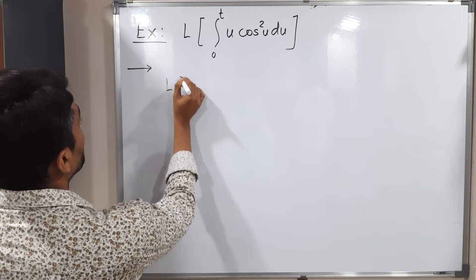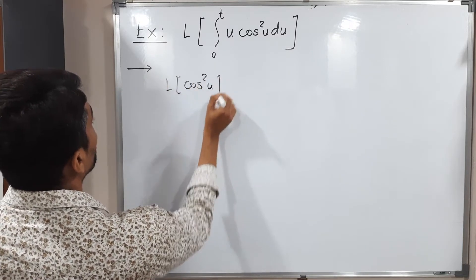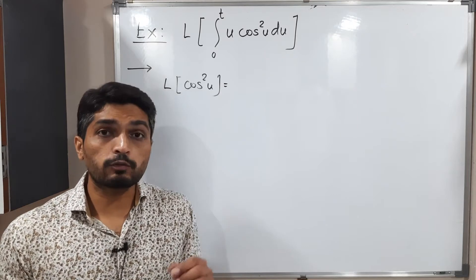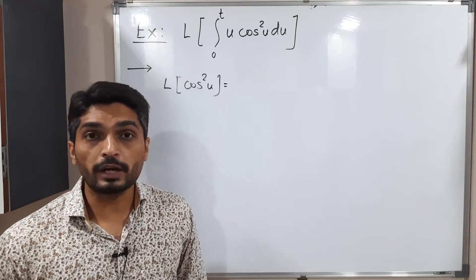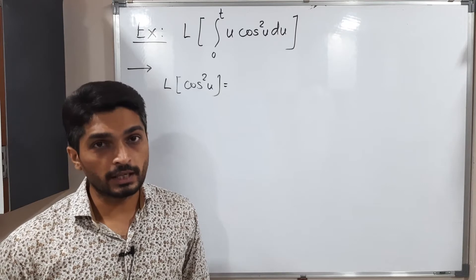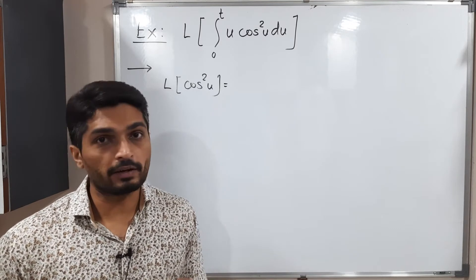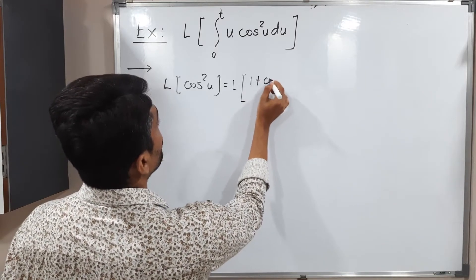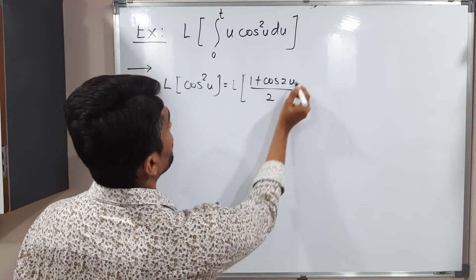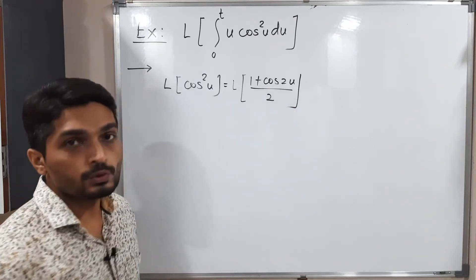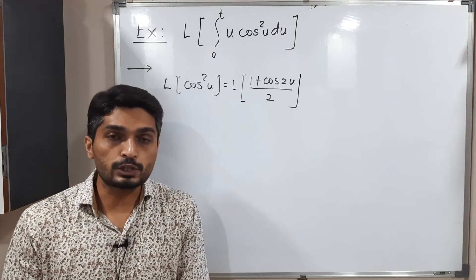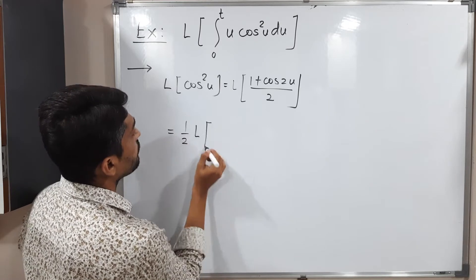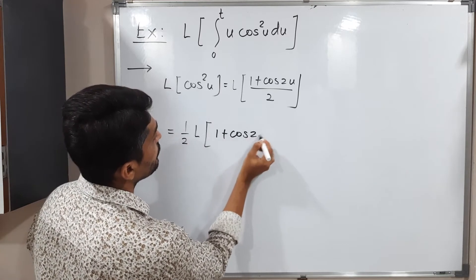First of all, I will write Laplace of cos²(u). Since there is a square, there is no direct formula to find its Laplace. So here we have to use the trigonometric identity: cos²(θ) = (1 + cos2θ) / 2. Using that formula, we write Laplace of (1 + cos(2u)) / 2. The square is now gone.